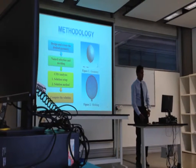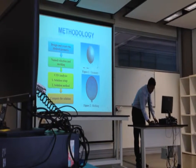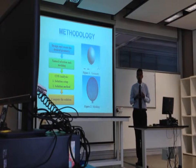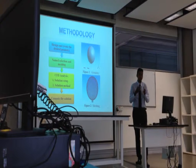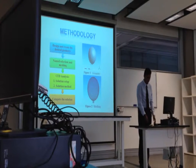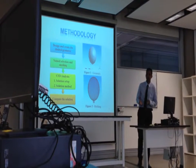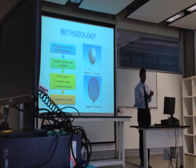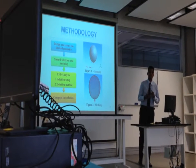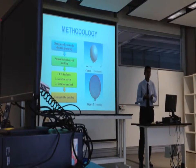This is the methodology. The first step is to create a geometry. As you can see, my geometry is in a sphere shape, because in the experiment they use a 20-litre spherical vessel. Next is name selection and meshing. Meshing is the step where we divide the geometry into smaller parts. This step is very important because we need to ensure that our mesh is high quality — if not, it will affect the accuracy of our results.